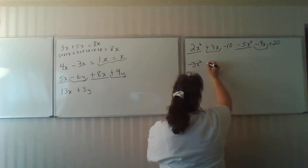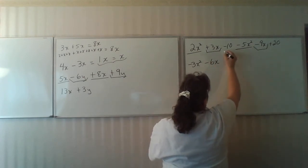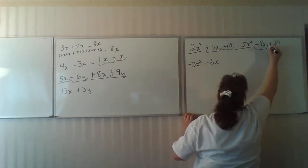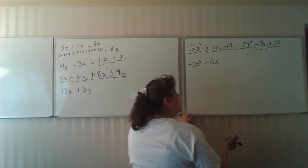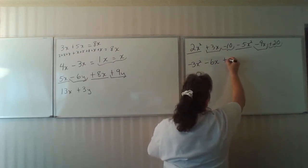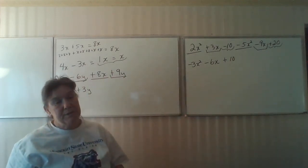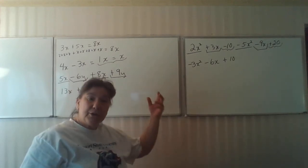Now I have a 3x minus a 9x. 3 minus 9 is a negative 6x. And now I have a minus 10 and a plus 20. Negative 10 plus 20 is a plus 10. Go back to your integer rules. That was our first lesson. You see why you needed it.